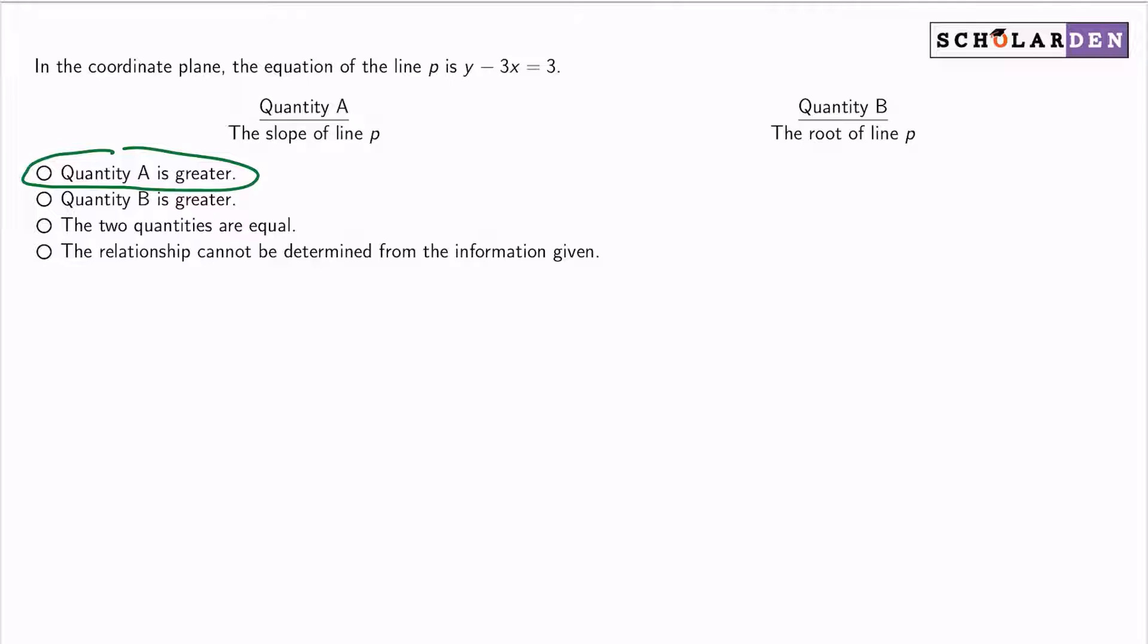So quantity A is the slope of line P. I'm taking a look at line P right here, and that's y minus 3x equals 3. So because this is a line, I understand that I can look at the slope by turning this into slope intercept form, where it's mx plus b, where m is the slope.